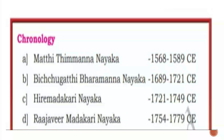Next, chronology of Chitradurga Nayakas. First, Mathi Timmanna Nayaka: 1568 to 1589 CE. Second, Bichugati Bharamanna Nayaka: 1689 to 1721 CE. Third, Hire Madakari Nayaka: 1721 to 1749 CE. Fourth, Rajavira Madakari Nayaka: 1754 to 1779 CE.